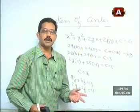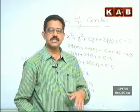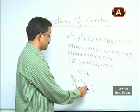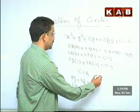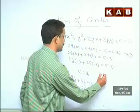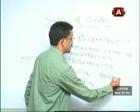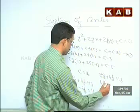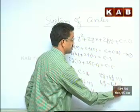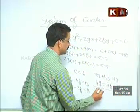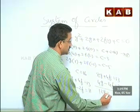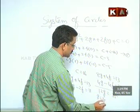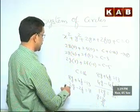Simplifying with c = 16: the second equation becomes 8g + 4f = 13, and the third equation becomes 2g − 2f = 11. Multiplying the third equation by 2 gives 4g − 4f = 22. Adding to the second equation, 12g = 35, so g = 35/12.